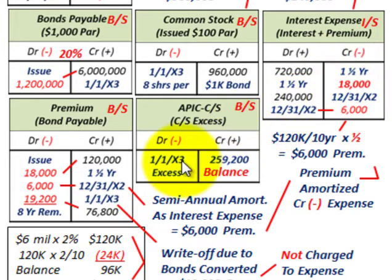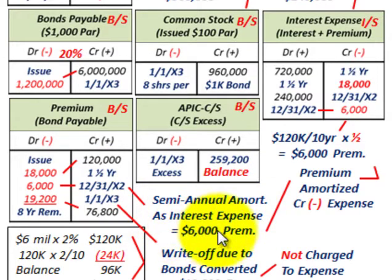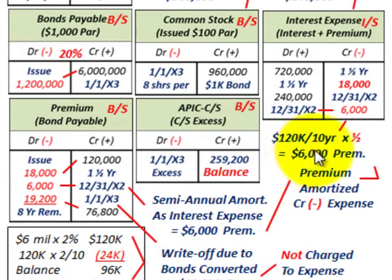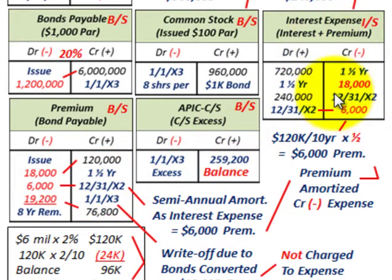On 12/31/X2, that's a semi-annual amortization of $6,000. That's based on $120,000 over 10 years — $12,000 per year — and semi-annually that's $6,000. We debit or reduce our premium account by $6,000, then credit interest expense, reducing it by $6,000 on 12/31/X2.